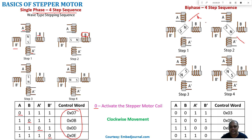In biphase, we are exciting two coils at a time. The control words are: first excite coils A and B, then B and A-dash, then A-dash and B-dash, and finally B-dash and A. These are the control words that must be specified to the stepper motor for its rotation.